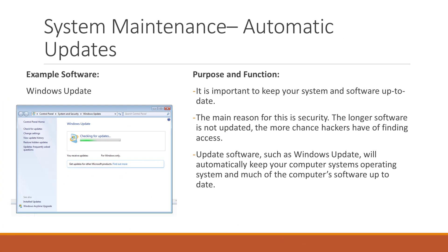Our final utility is the automatic update utility. It's important to keep your system and its software up to date, and the main reason for this is security. The longer software is not updated, the more chance hackers will have of finding a way to access your computer. Update software such as Windows Update will automatically keep your computer system's operating system and much of its software up to date, thus making it harder for hackers to get into your system.